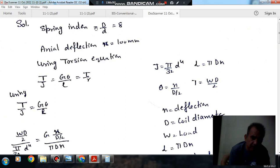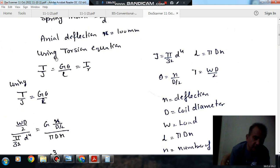So here spring index is given as D by d equals 8, spring index means mean coil diameter divided by wire diameter. And axial deflection X is given as 100 mm. Using the torsion equation in the spring: T by J equals G theta by L equals tau by R. And J is pi by 32 d to the fourth, d is the wire diameter, and L is the length of spring, that is pi D n.